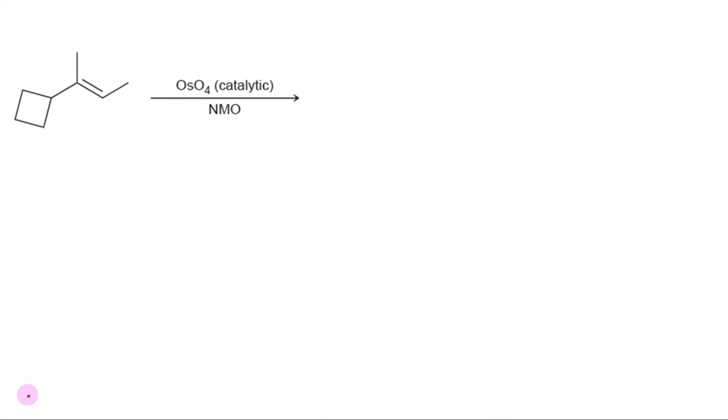Treating an alkene with catalytic osmium tetroxide and NMO results in the addition of OH and OH across the alkene. If OH is placed on top face, the methyl already present goes to bottom face. Same here, OH on bottom face, so that methyl on top face.